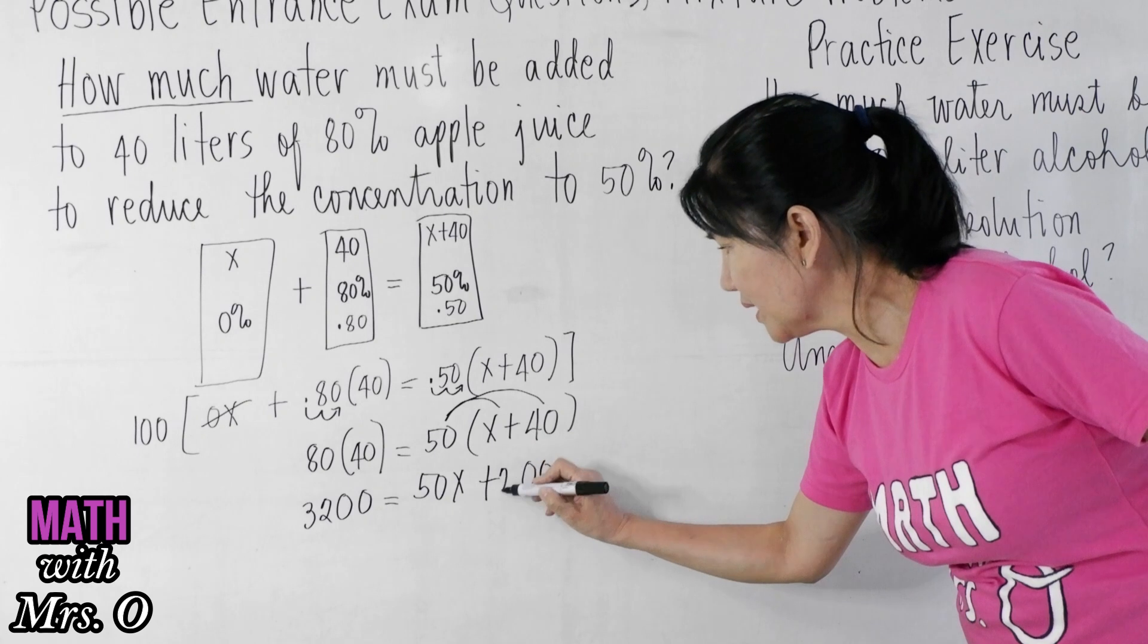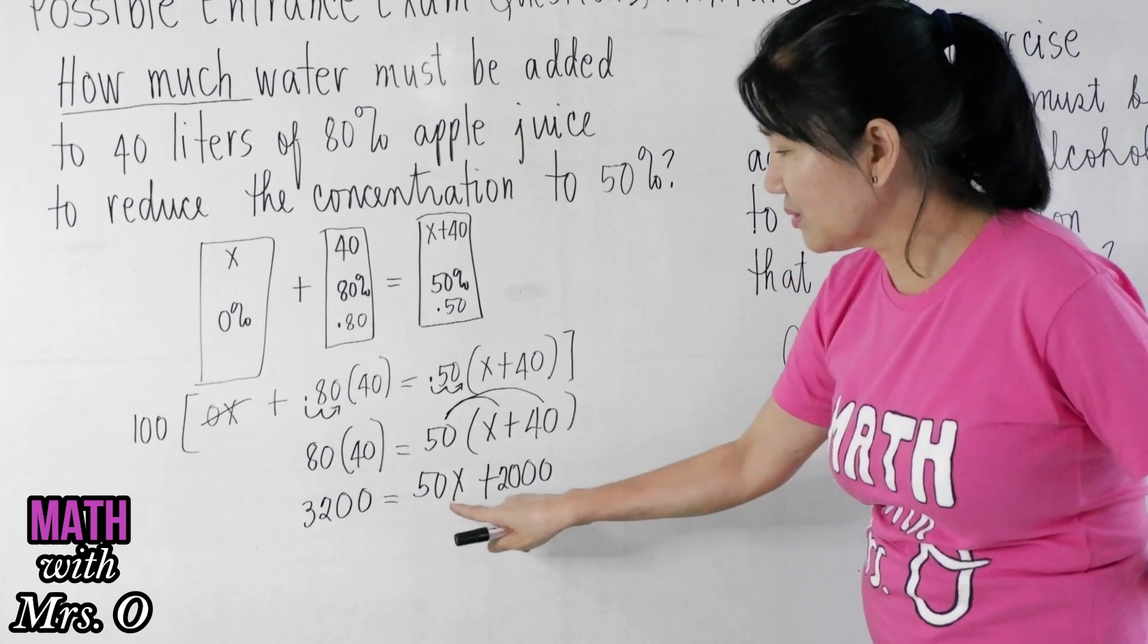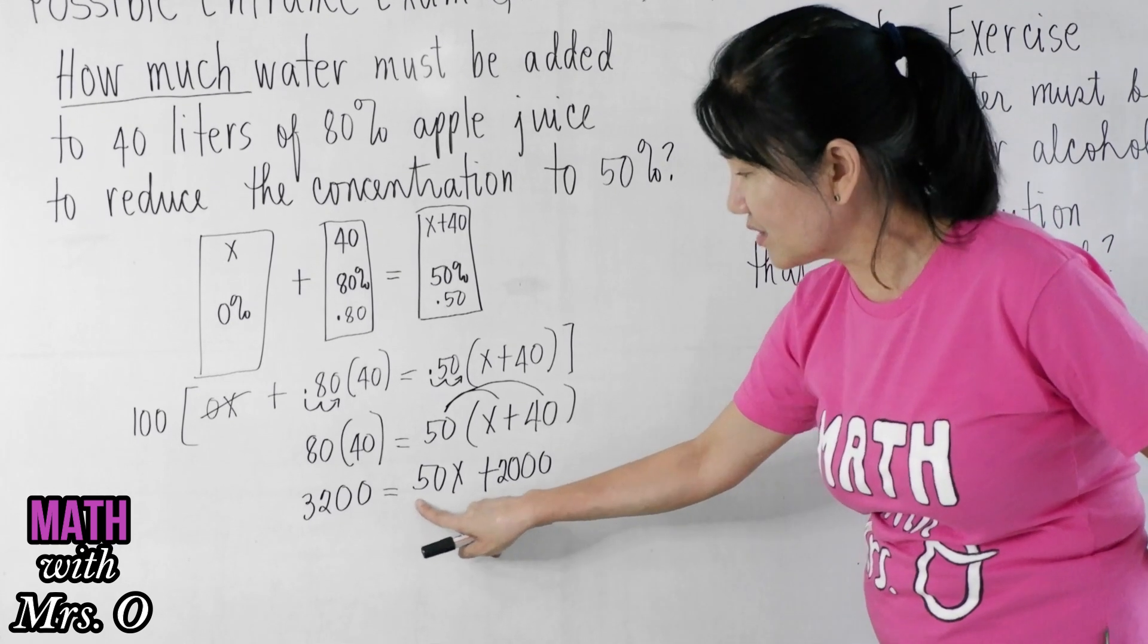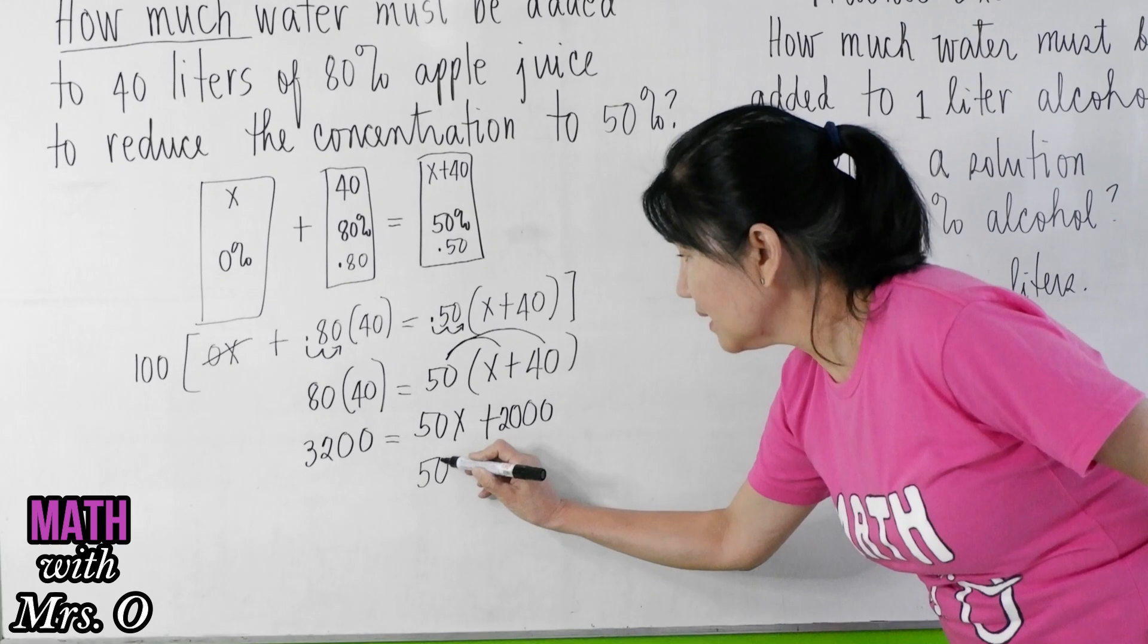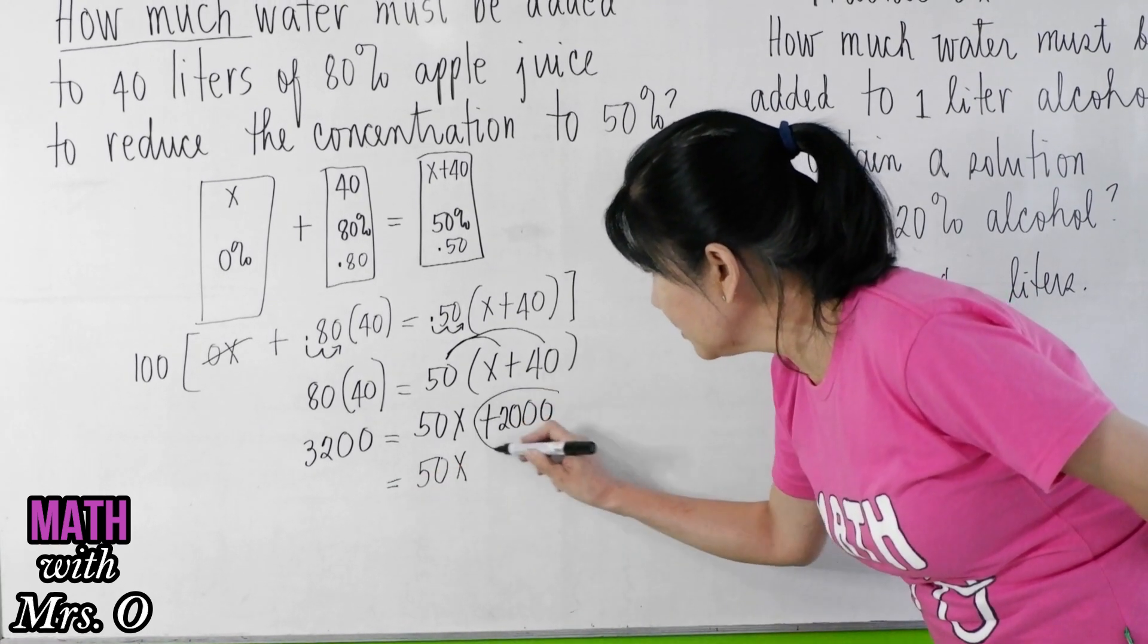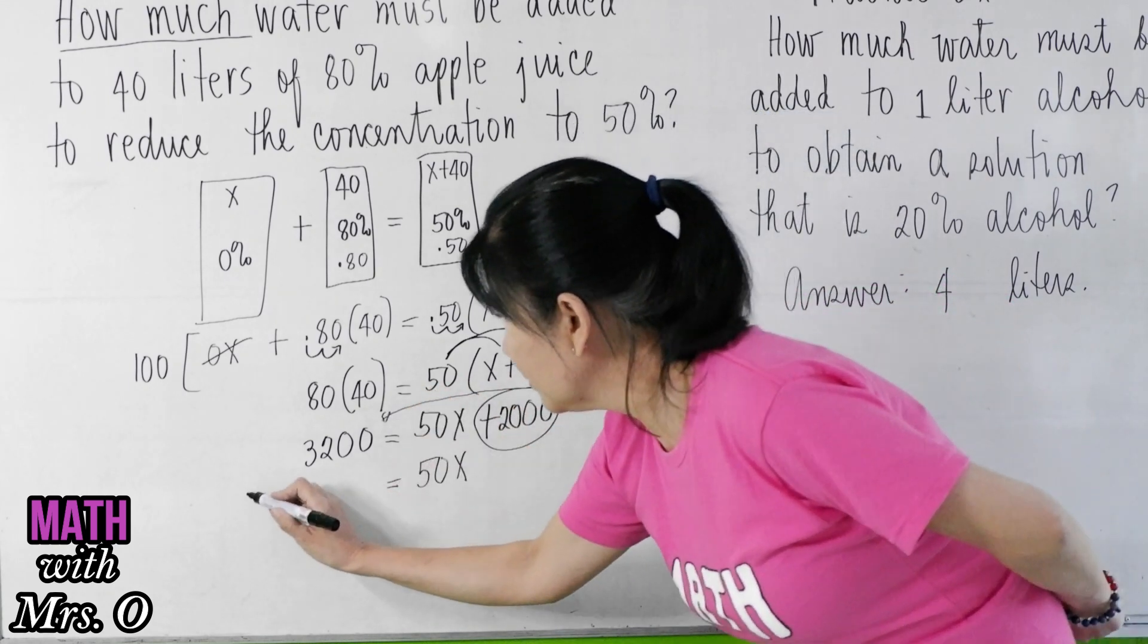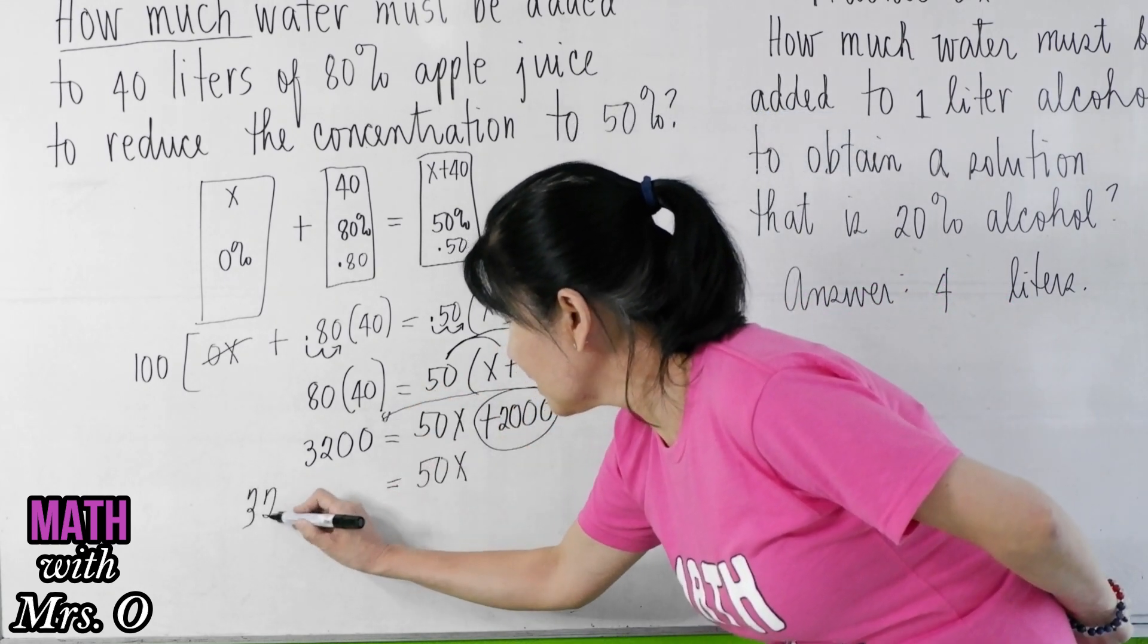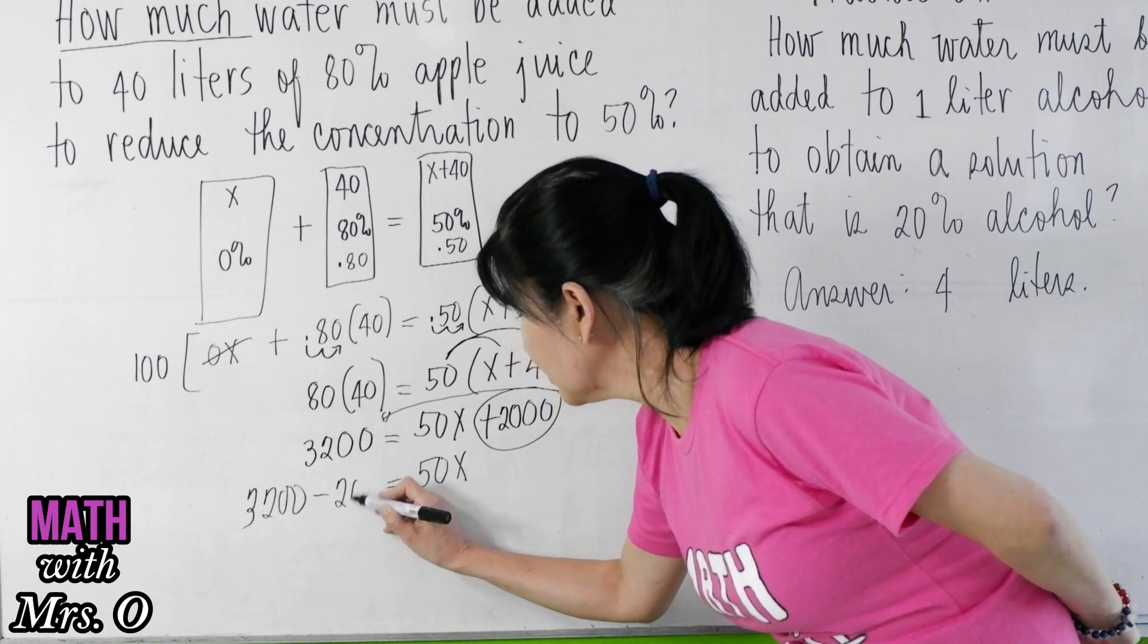...50, so you have 2000. Now isolate x, or the term with x, on one side. We can isolate 50x here and then transpose here to the other side.